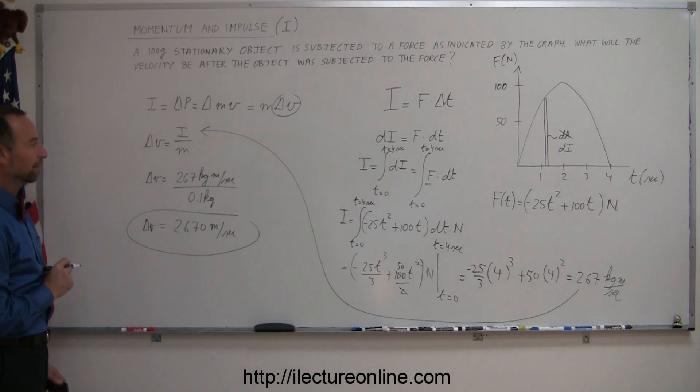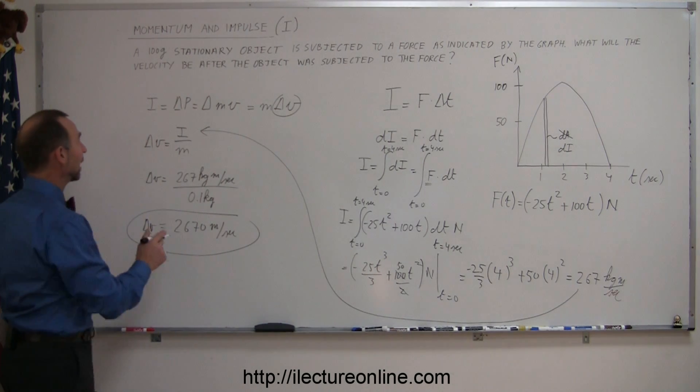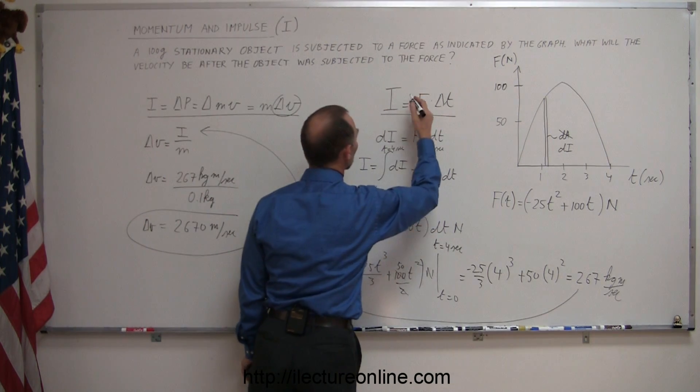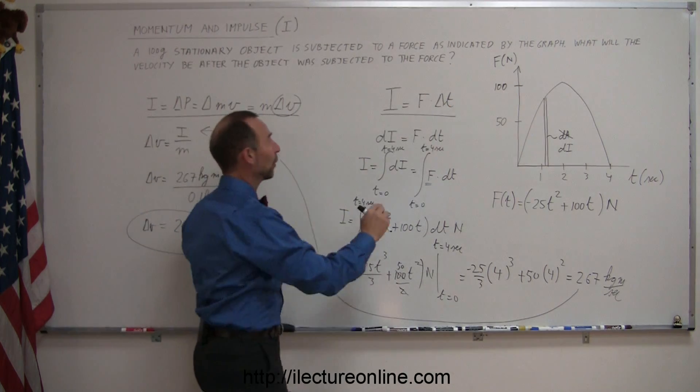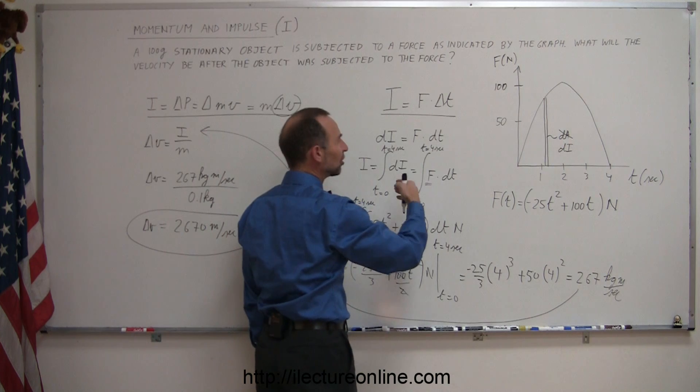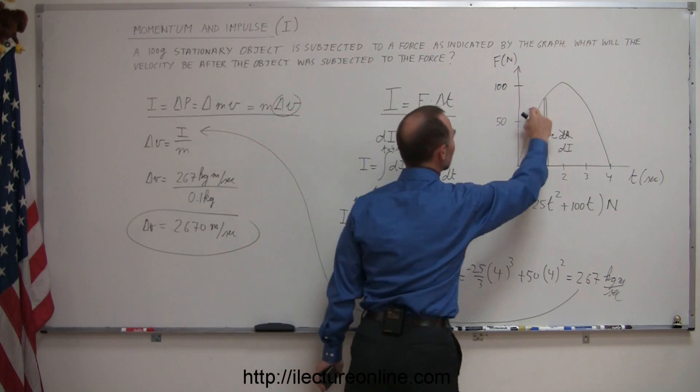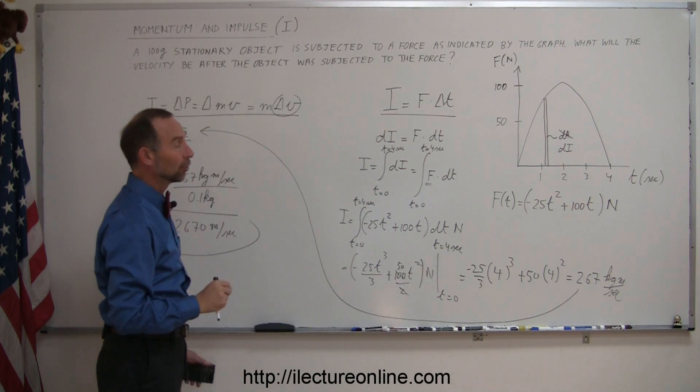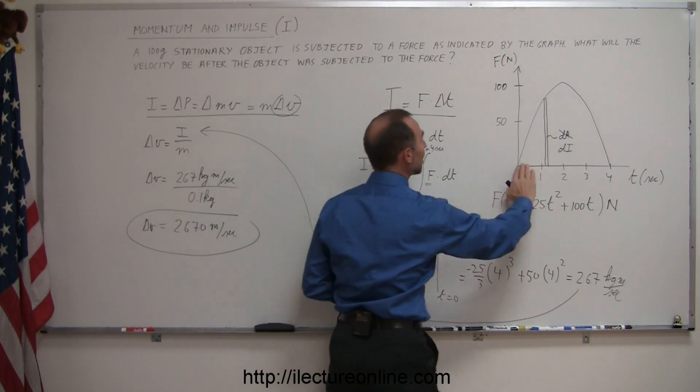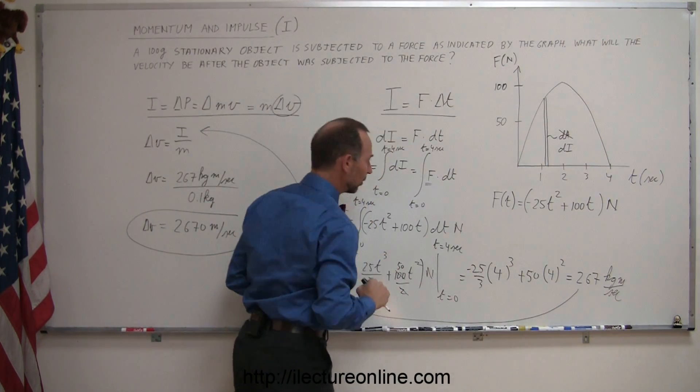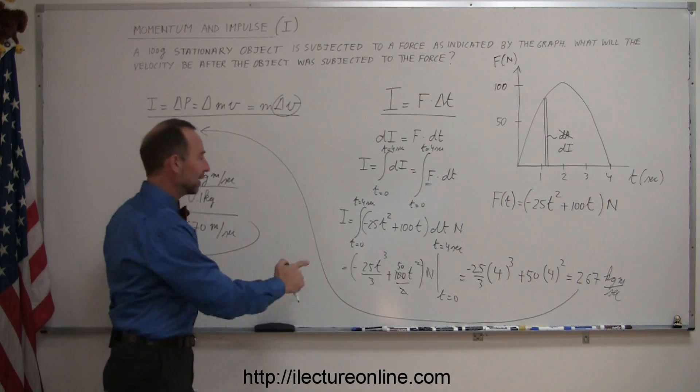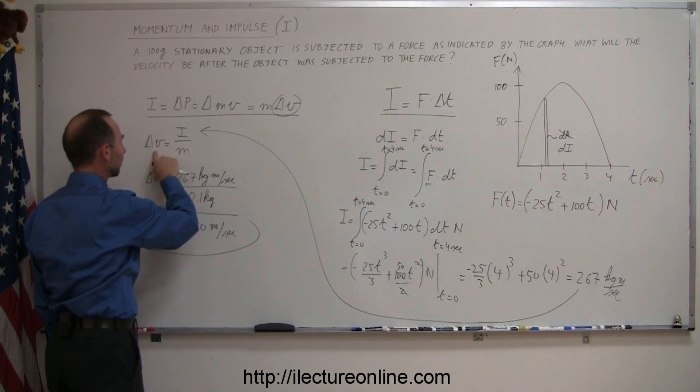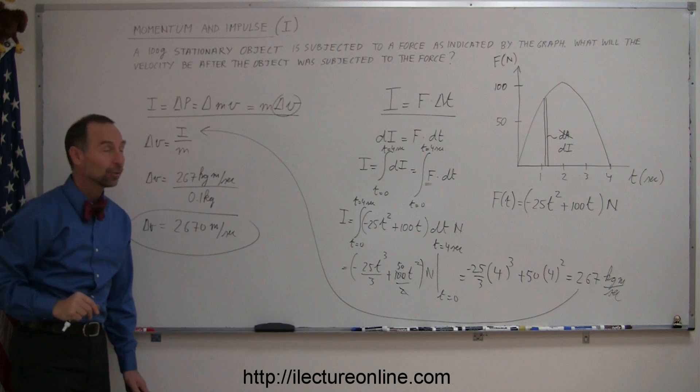There you go, that's how you do that. To recap: we have a definition of impulse in terms of change in momentum, and a definition of impulse as force times delta t. In this particular case we had a force that was not constant, so we have a continually changing force according to a quadratic equation represented by a parabola. To find the impulse, we had to find the area underneath this curve using calculus. When we finally found the impulse, we plugged that back into the other definition of impulse to find the change in velocity, and that gave us our answer.